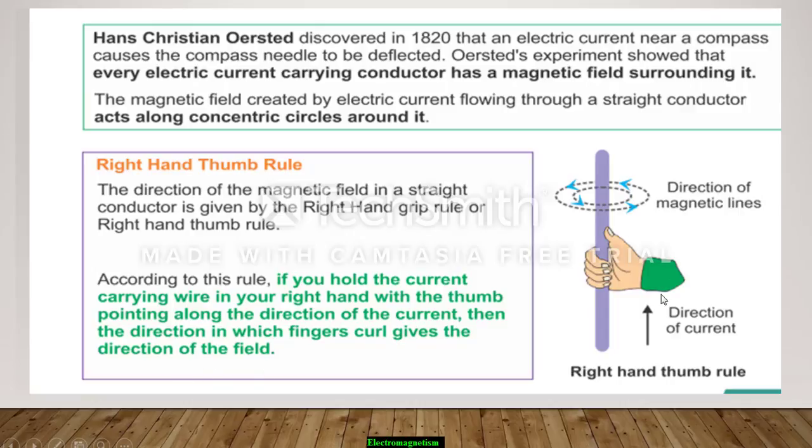See here, thumb shows the direction of current. Then the direction of magnetic field is given by the finger curls.